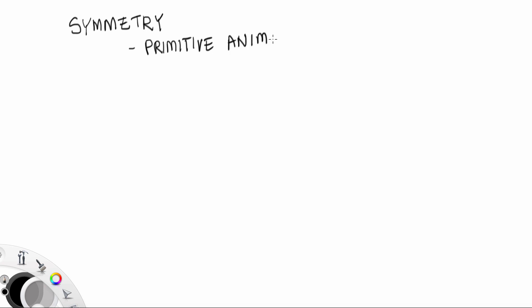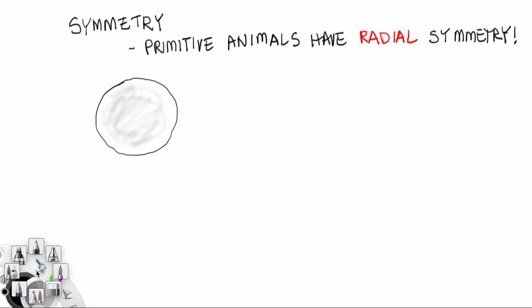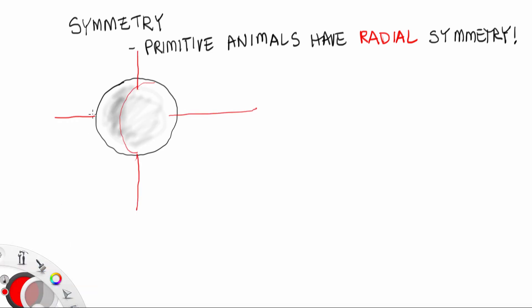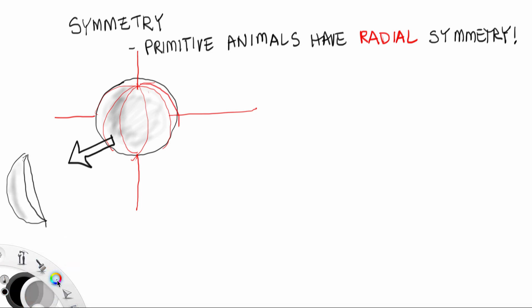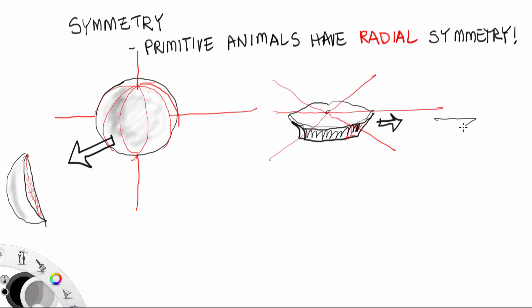Primitive animals exhibit what's called radial symmetry. Radial symmetry means that you can slice the object into radial parts, such as an orange, and you can cut it into pieces, and each of the pieces are symmetrical, meaning that they look very much alike. You can cut a pie into symmetrical parts, too, because a pie is radially symmetrical.